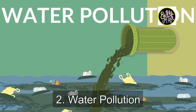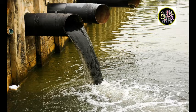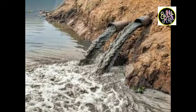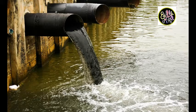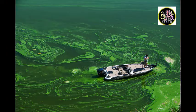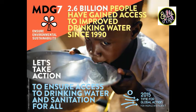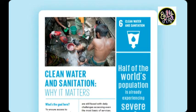Water pollution happens when chemicals or dangerous foreign substances are introduced to water, including chemicals, sewage, pesticides and fertilizers from agricultural runoff, or metals like lead or mercury. Water pollution isn't just a problem for the United States. According to the United Nations, 783 million people do not have access to clean water and around 2.5 billion do not have access to adequate sanitation. Adequate sanitation helps to keep sewage and other contaminants from entering the water supply.